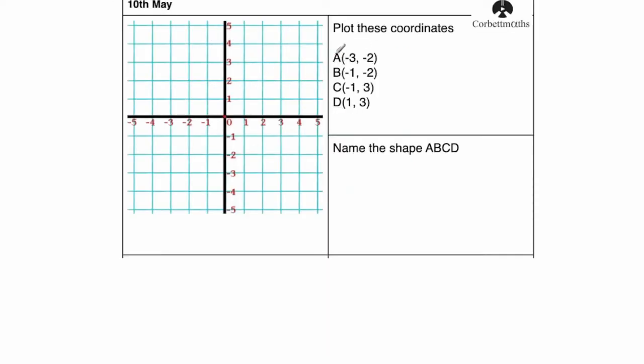Our first question, we've got to plot some coordinates, so we're going to plot the point A, which is minus 3, minus 2. So let's go minus 3 along the corridor, and 2 down the stairs. That will be the point A.